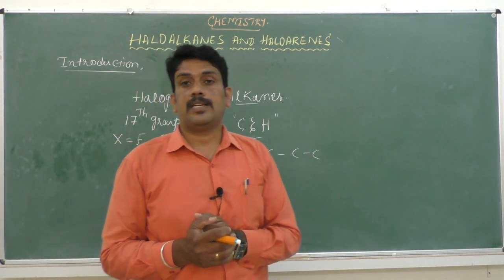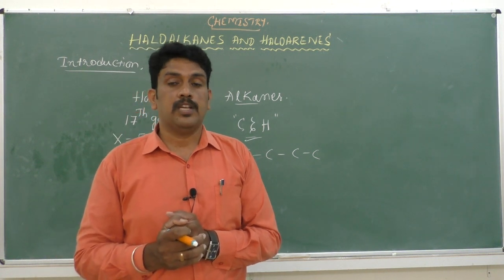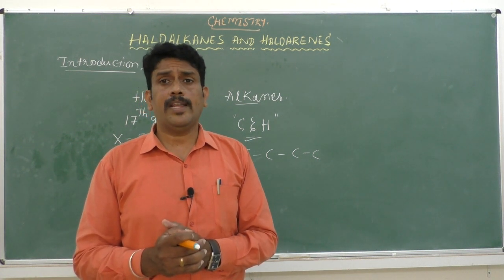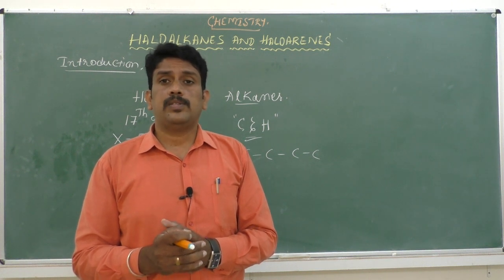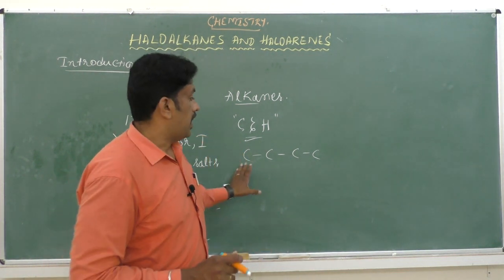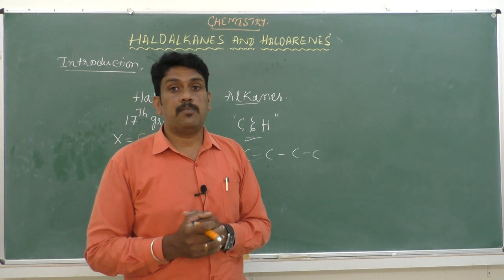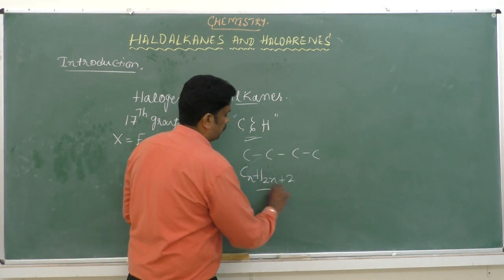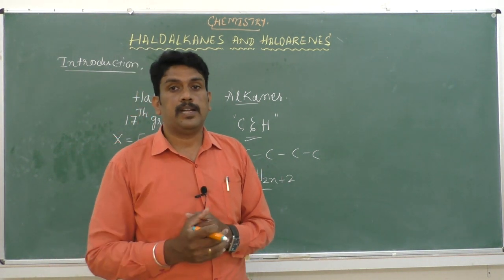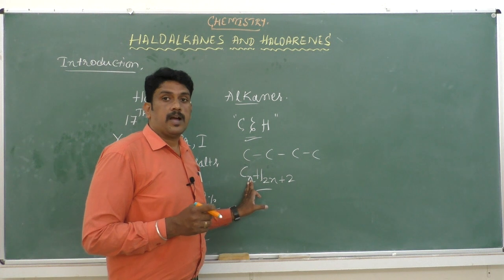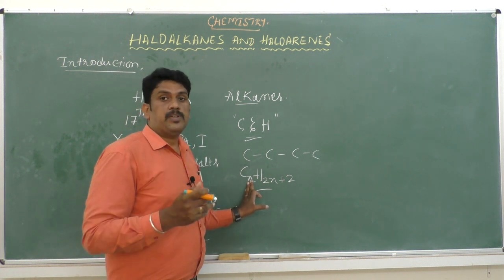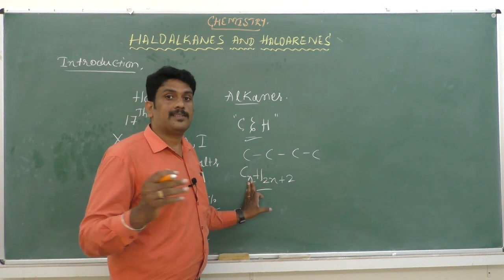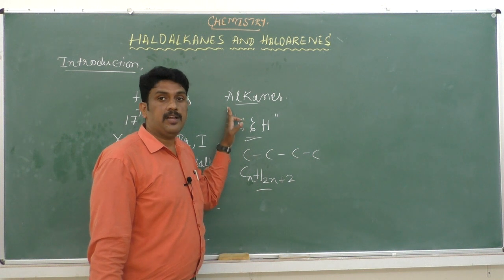We can call them cyclic or open chain compounds. There are also saturated as well as unsaturated types. Saturated compounds are hydrocarbons which contain only carbon-carbon single bonds, generally represented by the formula CnH2n+2, where n stands for the number of carbon atoms. The group members are methane, ethane, propane, butane, pentane, hexane, etc. These belong to the family of alkanes.